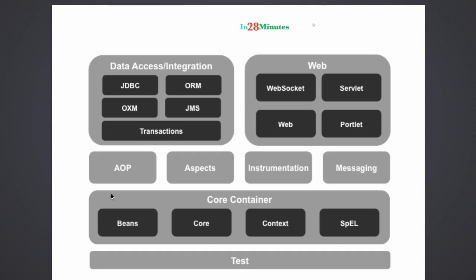Now that we understand a little bit about what the Spring framework does, let's get a bit of theory. What you are looking at on the screen is an overview of the different modules present in the Spring framework. The crux or main part of the Spring framework is the core container. The two important parts of the core container are the bean factory and the application context. In our examples, we were using application context to launch up the Spring beans, but we could also have used the bean factory.